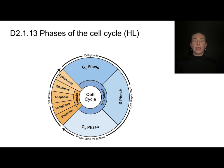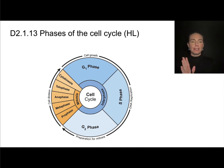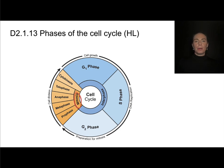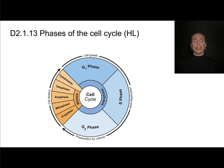Some of you may have learned interphase as the resting phase — the cell is not resting. The cell is doing lots of things; it's just not actively dividing. After interphase, we move into mitosis, which includes prophase, metaphase, anaphase, and telophase. Then the separation of the cytoplasm happens in cytokinesis. Once those cells have been separated, each of the daughter cells starts its own cycle again, and we're back in interphase.